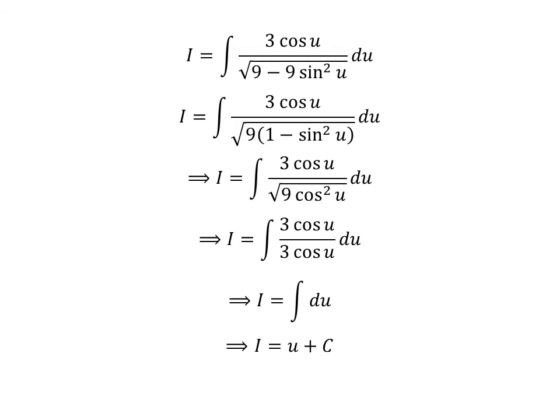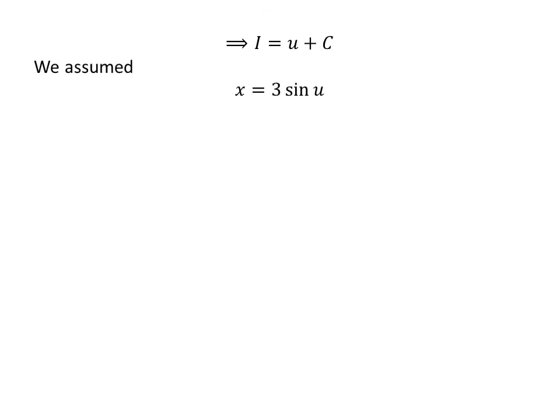Capital C is the arbitrary constant of indefinite integration — never forget to add this constant. We had assumed x is equal to 3 times sine of u. Taking 3 to the left-hand side gives us x upon 3 is equal to sine of u. As arc sine is the inverse function of sine, arc sine of x upon 3 is equal to u.